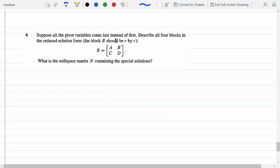Suppose all the pivot variables come last instead of first. So that means let's say that the pivot is not in the first column. Say it's in the, if this is R by R, say if it's on the fifth column or something like that.